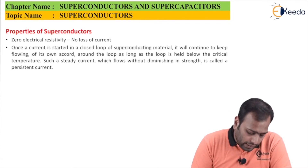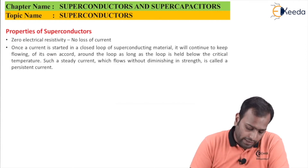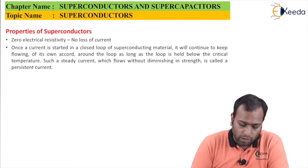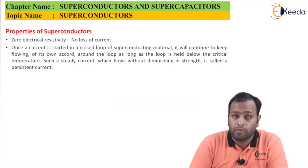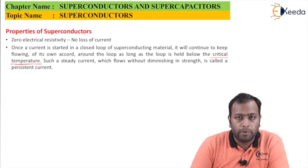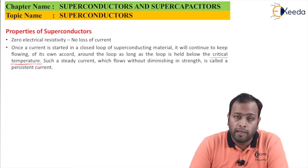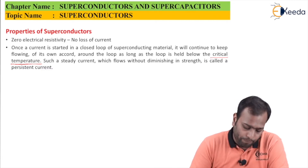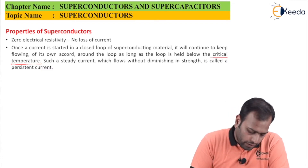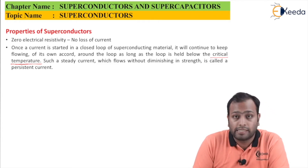Secondly, once a current is started in a closed loop of superconducting material, it will continue flowing on its own around the loop as long as the loop is held below the critical temperature. If you go beyond that temperature, you lose the superconducting property. Such a steady current flowing without diminishing in strength is called a persistent current.